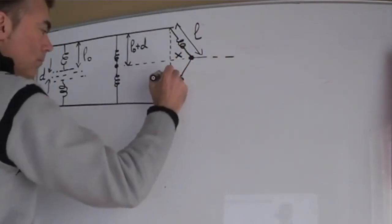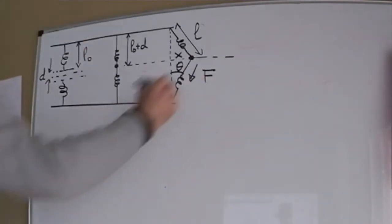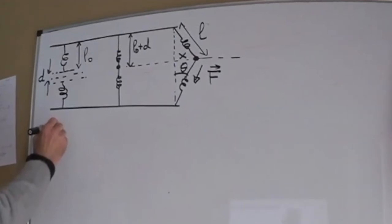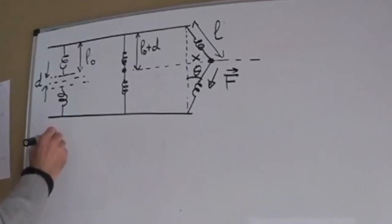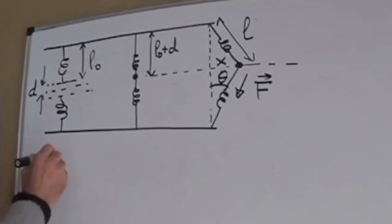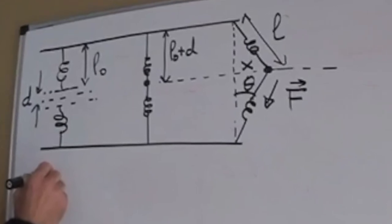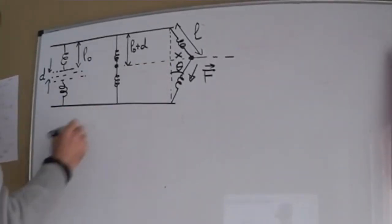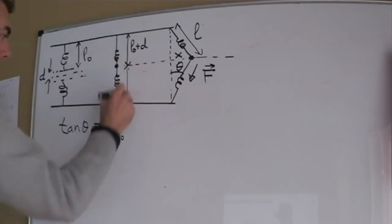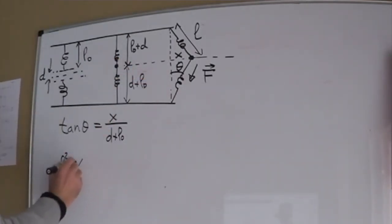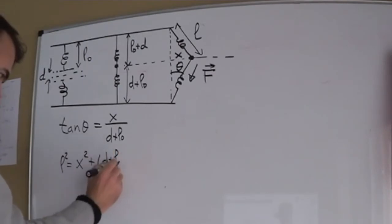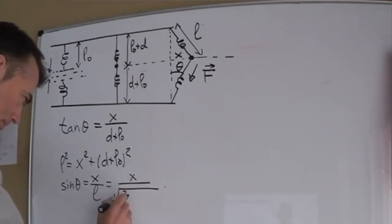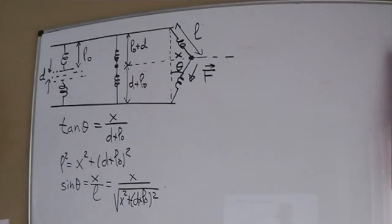Let's find the effective force on the mass and their related potential. First, let me write some geometrical relations that might be of use later. L0 is the equilibrium length of the spring without the mass. D is the distance that each spring is stretched initially. L is the length of each spring when the mass is at position x. I define this angle theta where the tangent of theta is x over d plus L0. I can also relate L with x, d, and L0 through L squared equals x squared plus (d plus L0) squared. Here sine of theta is x over L, so x over the square root of x squared plus (d plus L0) squared.